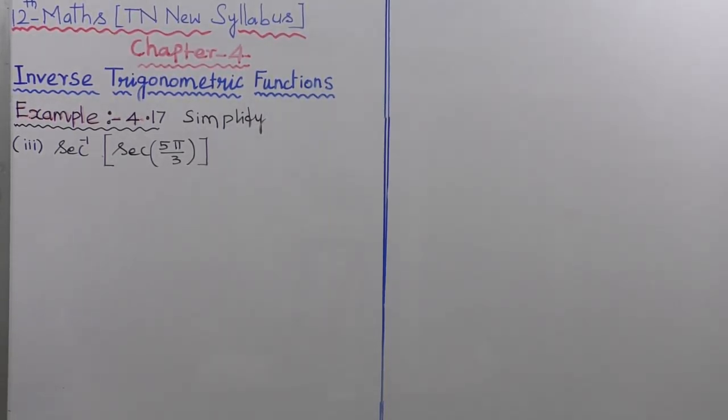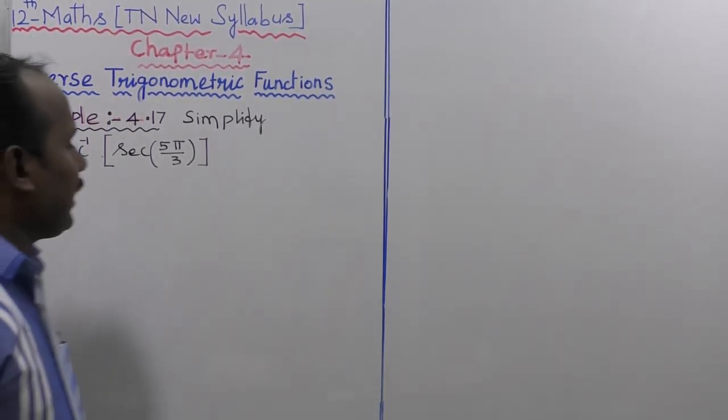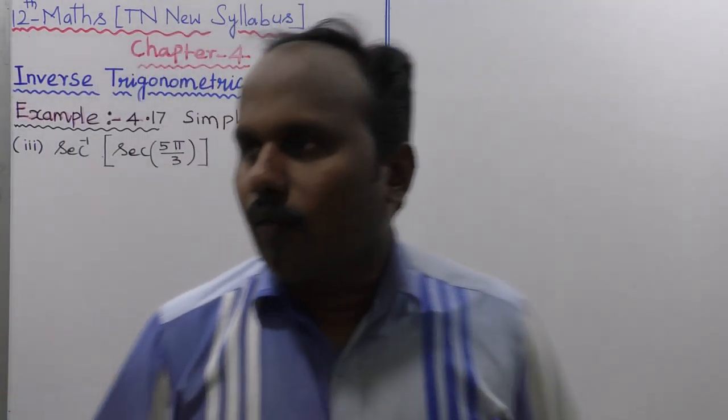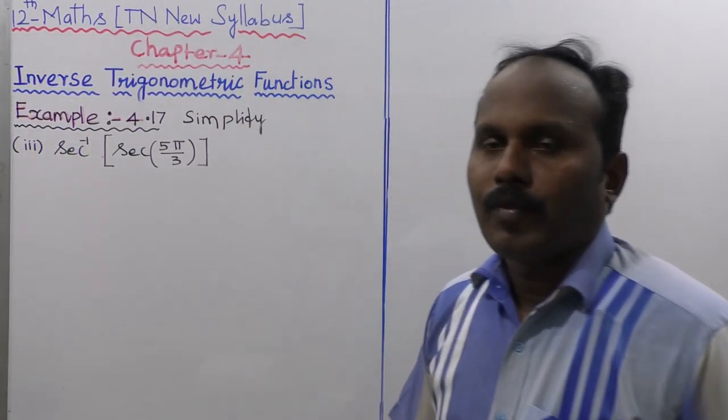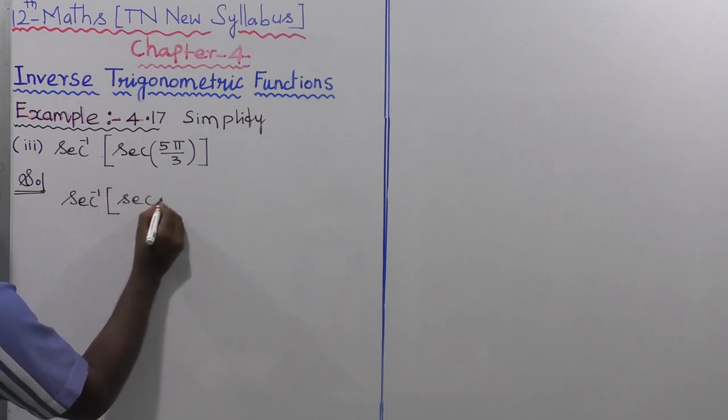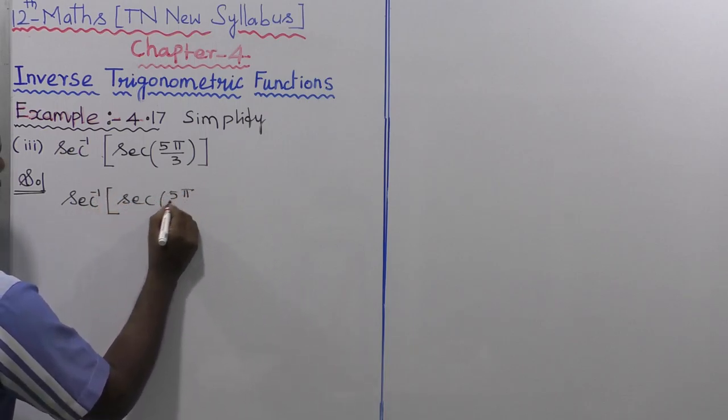Example 4.17: Simplify the third subdivision — secant inverse of secant of 5π/3. First of all, the principal value of secant inverse is the closed interval 0 to π, except π/2. The given value is secant inverse of secant of π/3.